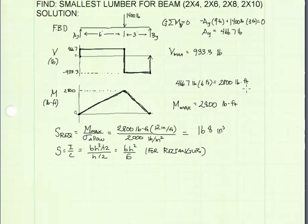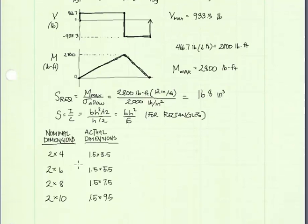So I'm going to go ahead and create that table of section modulus values. Now I'm in the process of constructing a table. And I've listed the nominal dimensions for our lumber choices here. And the problem statement said that the actual dimensions were 1 half inch less than the nominal dimensions. So I've written a table of the actual dimensions.